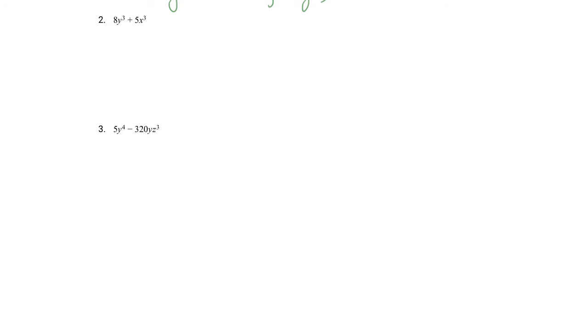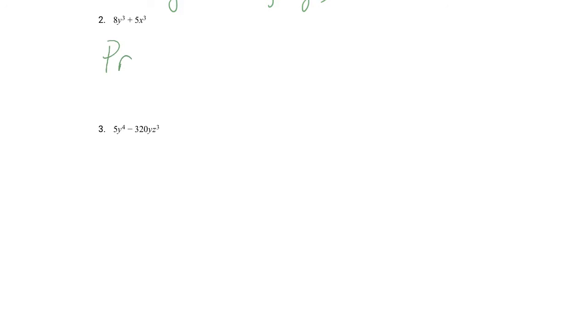Number 2: 8y cubed plus 5x cubed. y cubed is a perfect cube because you can divide the exponent by 3. 8 is a perfect cube — 2 times 2 times 2. x cubed is a perfect cube. But 5 is a prime number; we can't factor it at all. These two terms have absolutely nothing in common. This is a prime polynomial — one of those strange prime polynomials that we cannot factor.